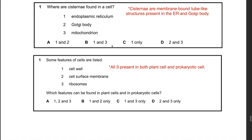Question 28: where are cisternae found in a cell? Options are: 1 — endoplasmic reticulum; 2 — Golgi body; 3 — mitochondrion. Cisternae are membrane-bound tube-like structures found only in the endoplasmic reticulum and the Golgi body, not in the mitochondrion. The best answer is A — 1 and 2 only.